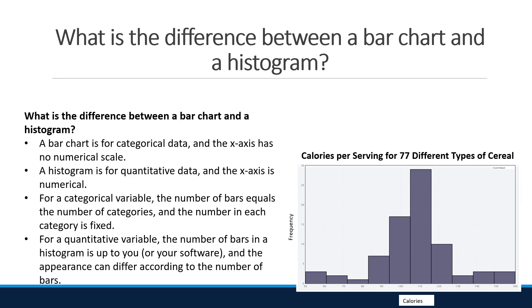What is the difference between a bar chart and a histogram? A bar chart is for categorical data and the x-axis has no numerical scale. The histogram is for quantitative data and the x-axis is numerical. For a categorical variable, the number of bars equal the number of categories. The number in each category is fixed.